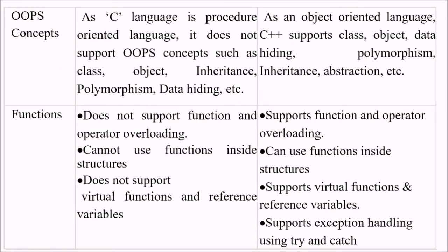C language is a procedure-oriented language. It does not support OOP concepts like class, object, inheritance, polymorphism, or data hiding.